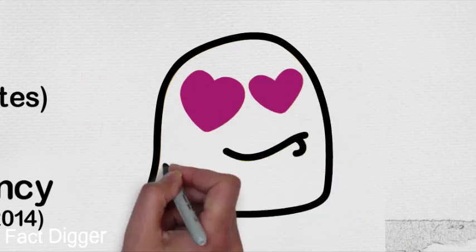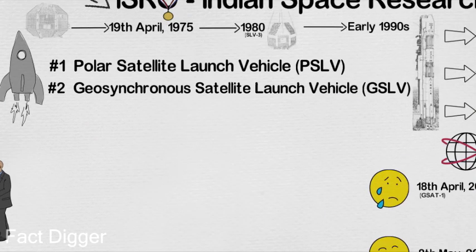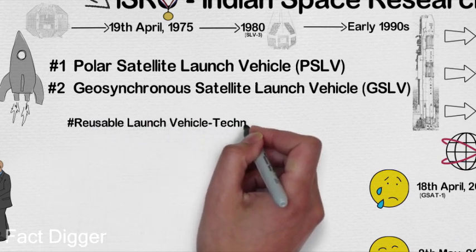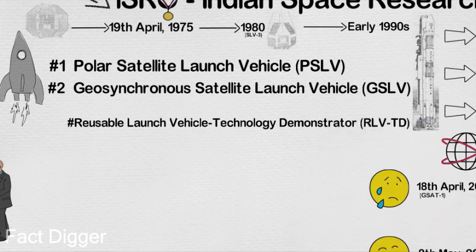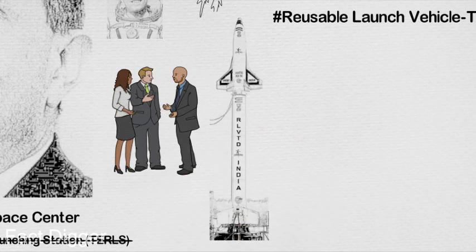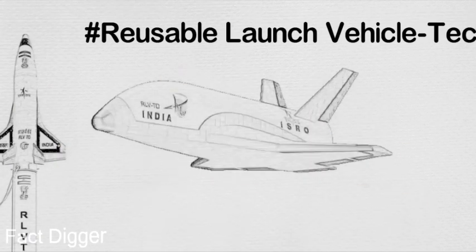To continue its space activities, ISRO is all set with various future projects. Currently, ISRO is working on numerous projects like the Reusable Launch Vehicle Technology Demonstrator, or RLV TD in short. The idea is that after placing satellites into orbit, the RLV will fly back to Earth and land like a normal airplane after the mission.